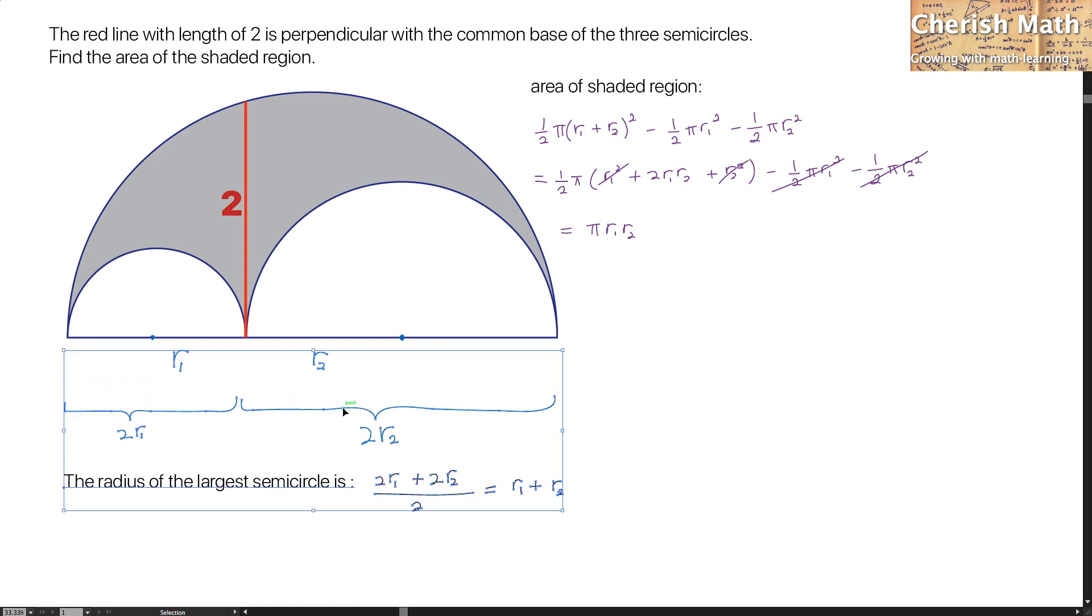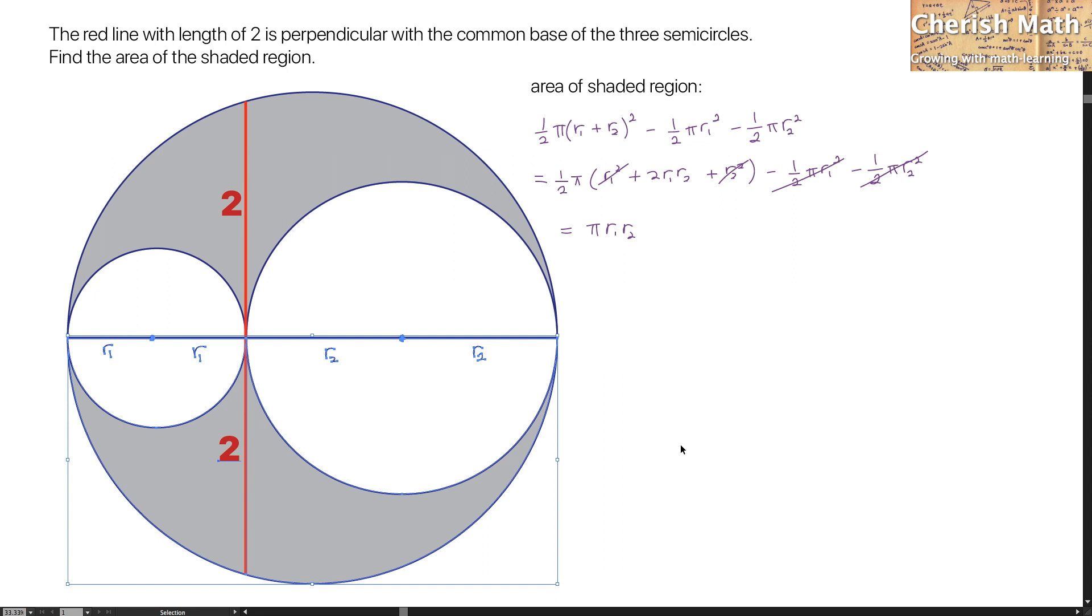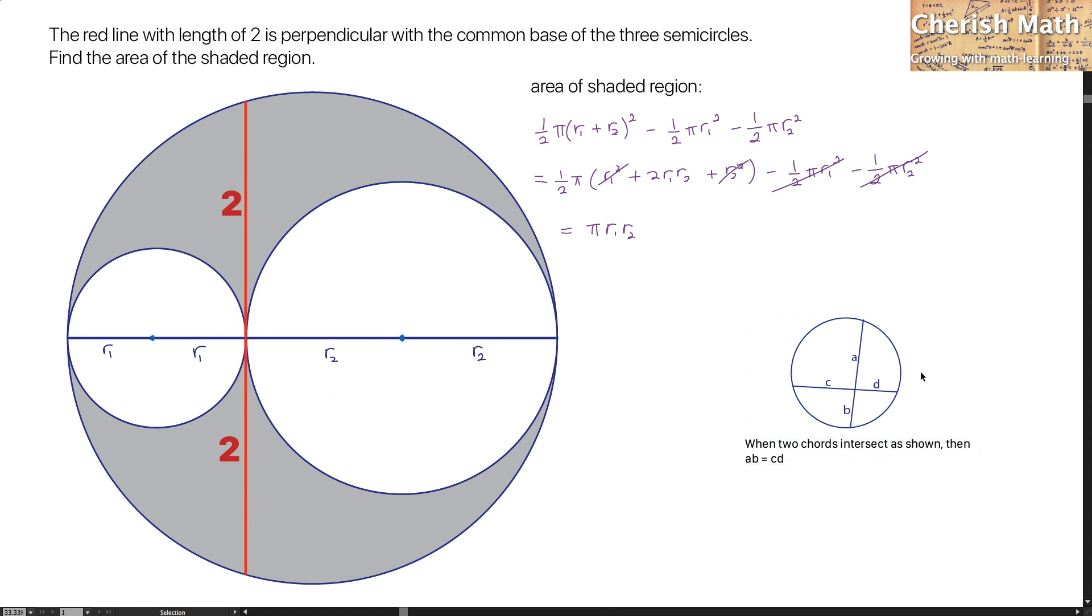For the next thing to do, let me clean up this part in order to extend the semicircles into full circles. Now, in the next step, I'm going to use the chord theorem to solve the problem, and let me explain how it looks.